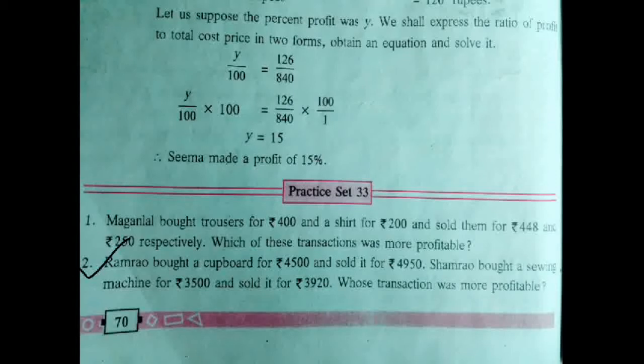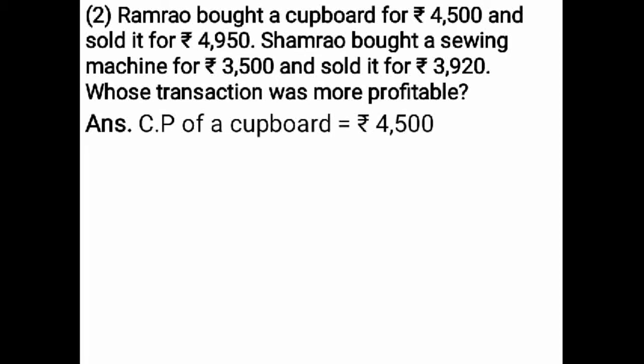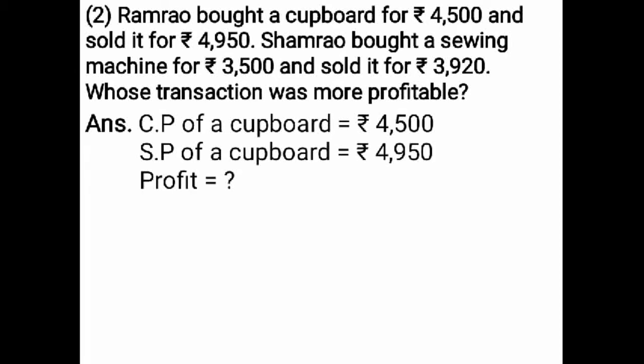Ram Rav bought a cupboard for Rs. 4,500 and sold it for Rs. 4,950. Sharm Rav bought a sewing machine for Rs. 3,500 and sold it for Rs. 3,920. Whose transaction was more profitable? First, write the cost price and selling price of the cupboard, then find the profit and profit percent of the cupboard.